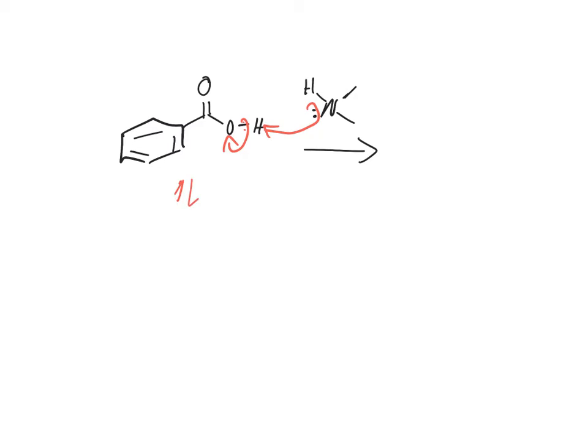That's always going to be the first step. This makes the carboxylate—the negatively charged, resonance-stabilized, deprotonated carboxylic acid. And it makes the protonated amine, essentially forming a salt with a plus-charged nitrogen.